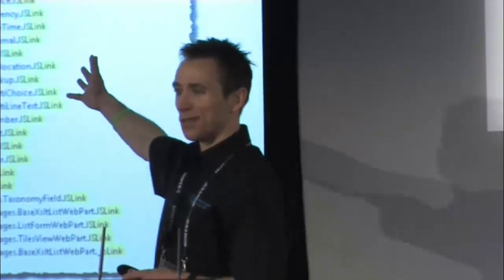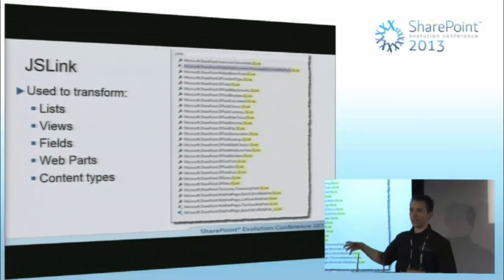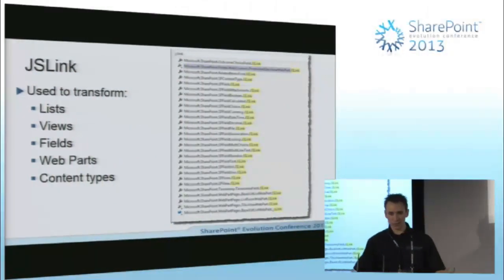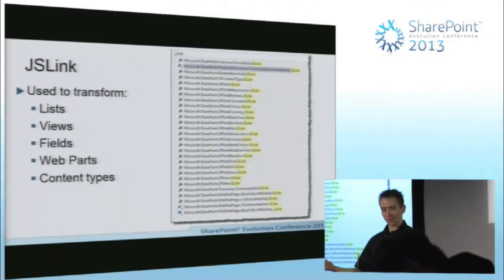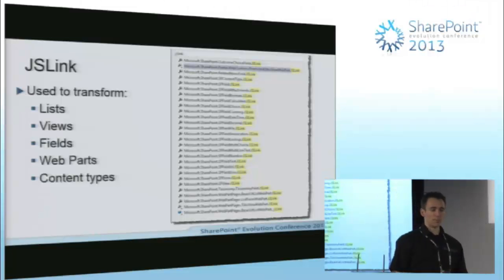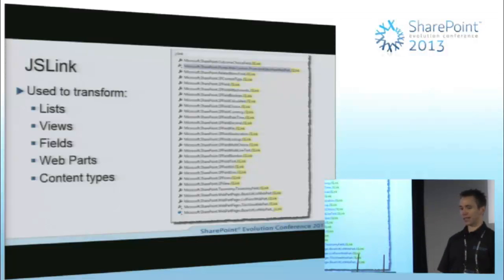This is me searching in Visual Studio in the object browser for JSLink. These are all the controls in SharePoint that have this new JSLink property. You can see it's something very prevalent in SharePoint and we can use it to customize lots of pieces of the UI — lists and views, fields and web parts, and lots of other interesting scenarios like content types.